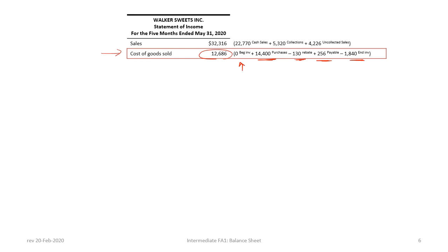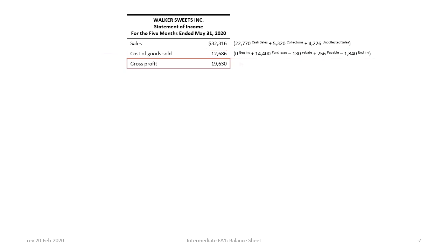Please make sure you can reconcile these numbers from the data before proceeding. Once we've calculated sales and cost of goods sold, we calculate gross profit of $19,630. At this point, can you determine the type of income statement that we are preparing? If you answered a multi-step income statement, you would be correct.